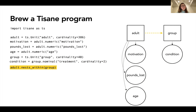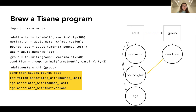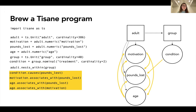We can then specify that adults are nested within groups, which introduces another edge from adult to group, specially typed for a nesting relationship. We can then start specifying our conceptual relationships, such as the fact that we hypothesize that condition causes pounds lost, that motivation and pounds lost are associated with one another, that age is associated with pounds lost, and that age is associated with motivation. The key difference between associations and causal relationships here is that causes are unidirectional, whereas associations are bidirectional.